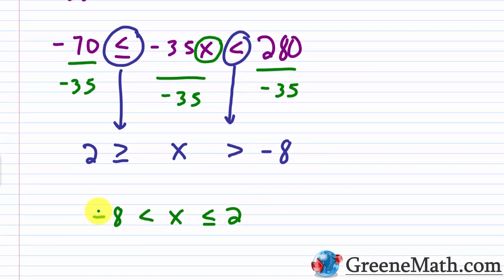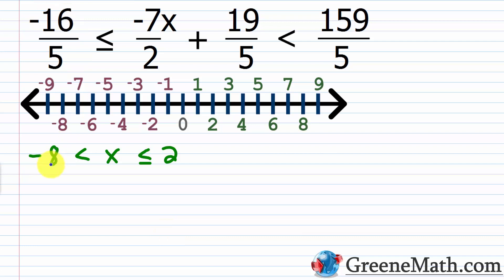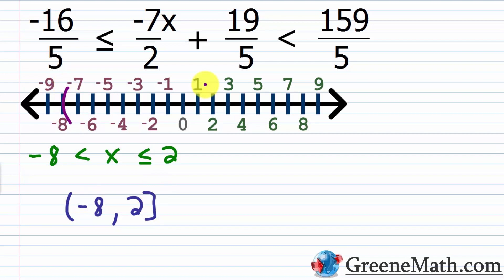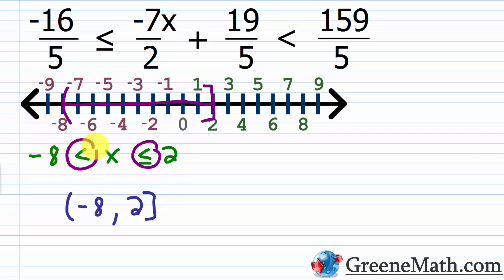In interval notation, negative 8 is not included, so put a parenthesis then negative 8, then comma, then 2 with a bracket since 2 is included. Graphically, put a parenthesis at negative 8 and a bracket at 2, then shade everything in between. X is greater than negative 8 and less than or equal to 2. Any number in the shaded region works, including 2 but not including negative 8.